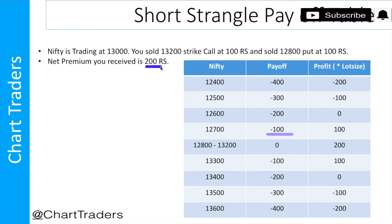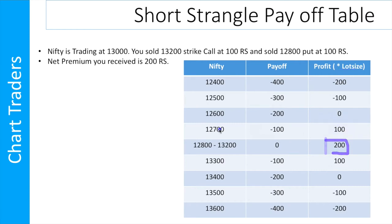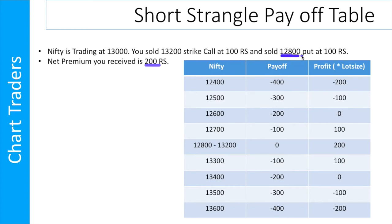So you receive 200 total premium. At 12,600, you get zero — no profit. That is your lower break-even point. The premium received is 200, so your break-even points are 13,400 on the upside and 12,600 on the downside. Between 13,400 and 12,600 you are safe — no loss in this range.